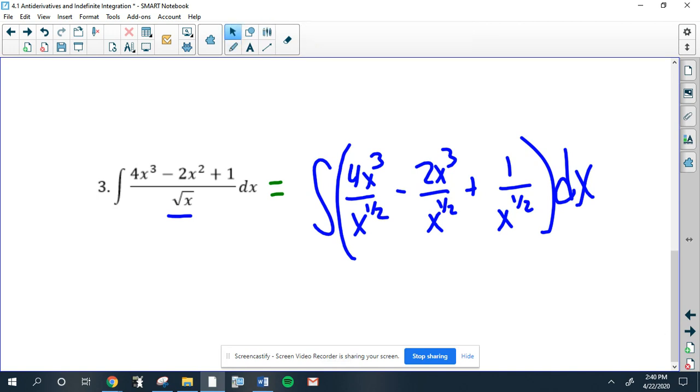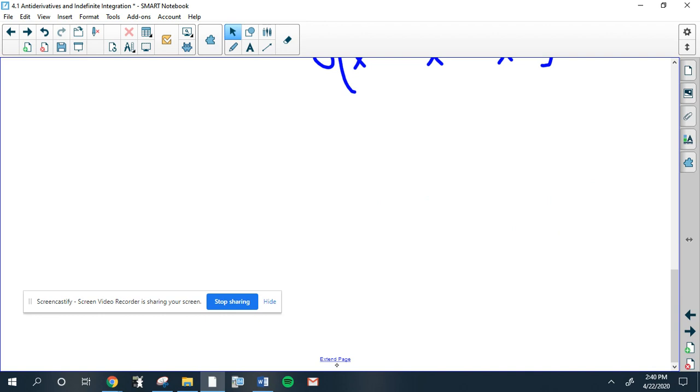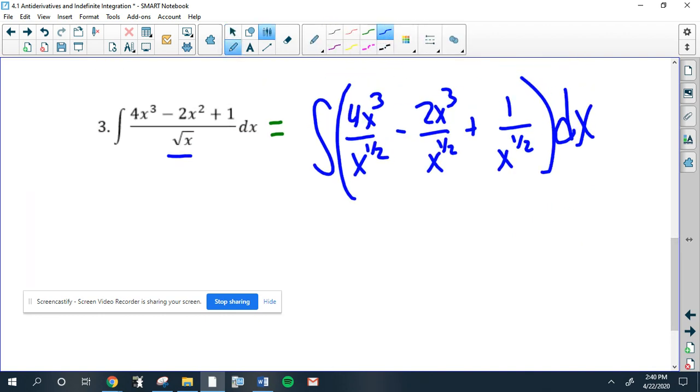So now we're going to use rules of exponents to bring all the x's to the top, just by subtraction. Three minus 1/2 is 6/2 minus 1/2, which is 5/2. Two minus 1/2—that's a 2, my mistake—2 minus 1/2 is 4/2 minus 1/2, which is 3/2. And this last exponent, which we bring up, is x to the negative 1/2. It's still all with respect to x.